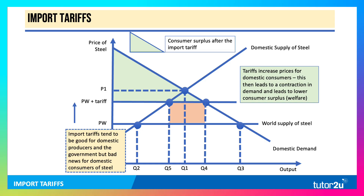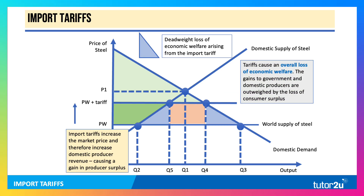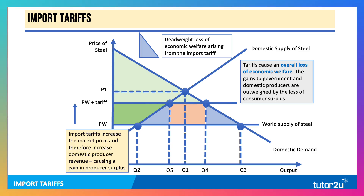Import tariffs tend to be good news for domestic producers — their producer surplus goes up — and also for the government, which gets tax revenue. But they're bad news for domestic consumers of steel. There's a deadweight loss, an overall loss of welfare, because the gains to government and domestic producers are outweighed by the loss of consumer surplus.